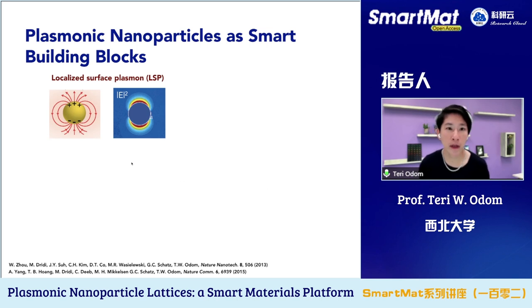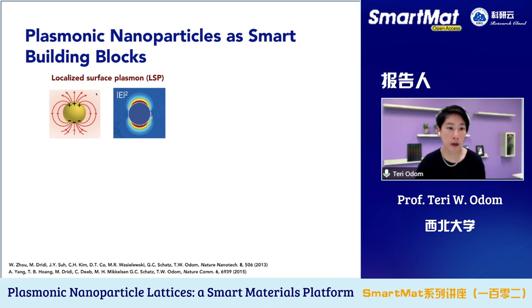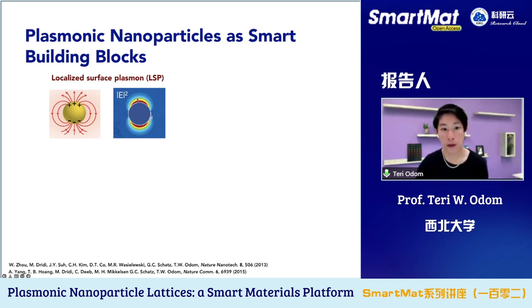I want to focus on some of the properties of these plasmonic nanoparticles as smart building blocks. Small metal nanoparticles can support what's called a localized surface plasmon when excited by light. These plasmons are collective oscillations of electrons that oscillate about the center of mass of the particle. If the particle is much smaller than the wavelength of light, you will have a dipolar excitation — this is the dipolar radiation pattern. Moreover, because they're small metal particles, the localized field enhancements are tightly confined to the particle surface, which makes some of these properties very special.